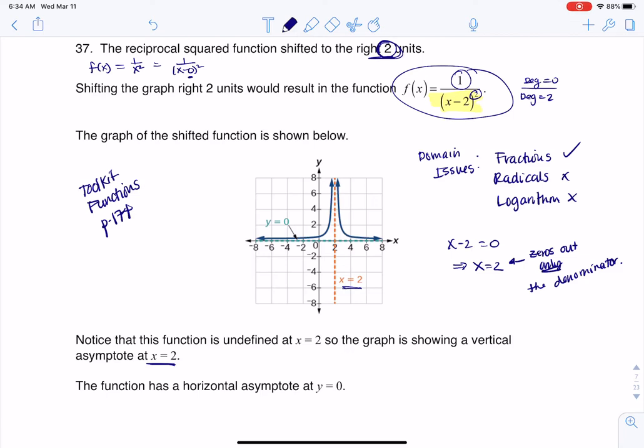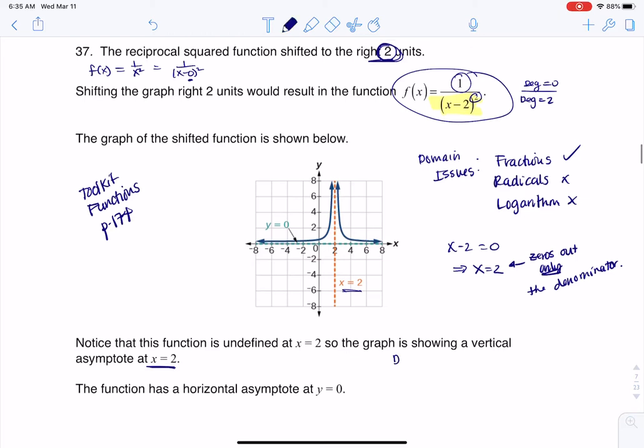Now, we talked about end behavior, and there's a case for end behavior: whenever the degree in your numerator is less than the degree in your denominator, you're always going to have a horizontal asymptote at y equals zero, and that's why we've got that end behavior at y equals zero.